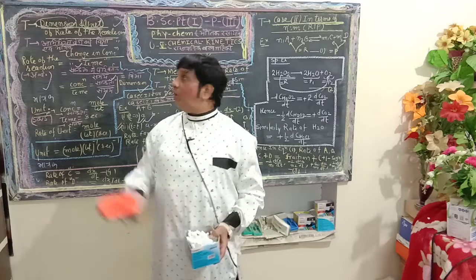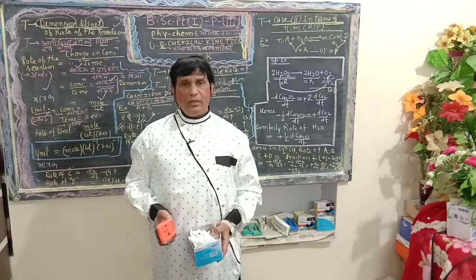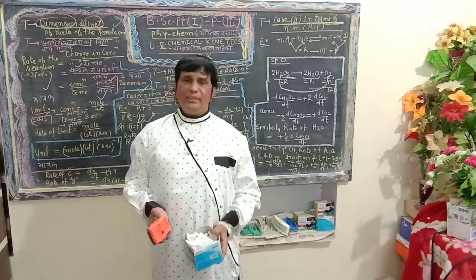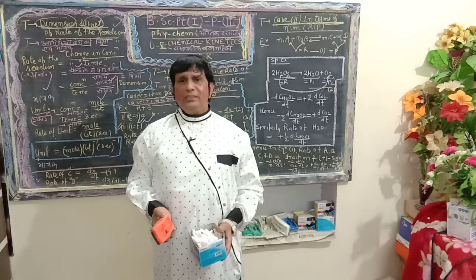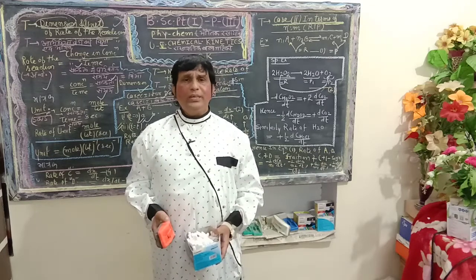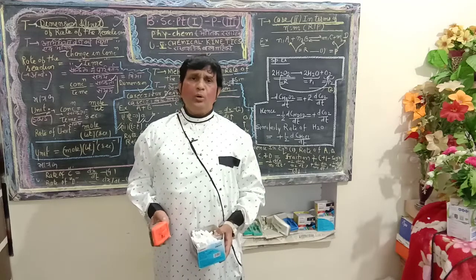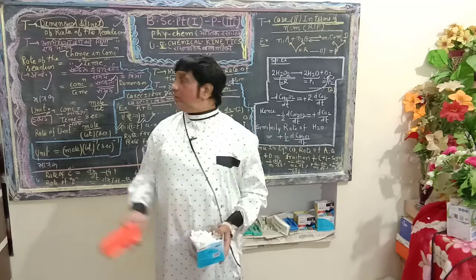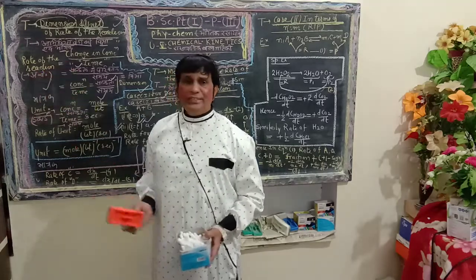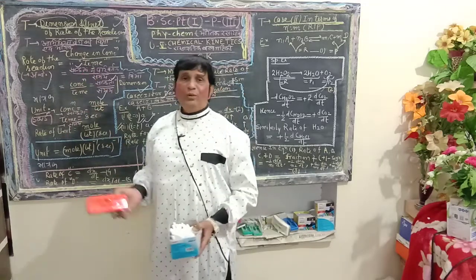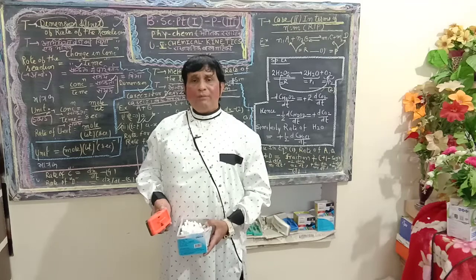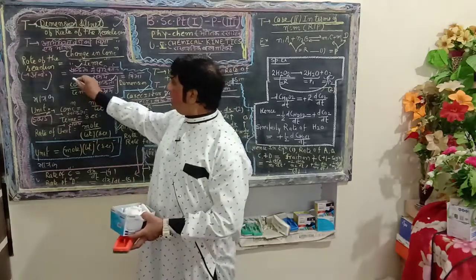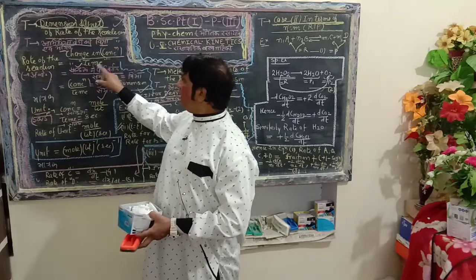Dimension is the fundamental quantity used to define any chemical reaction. Unit is a measure used to define a dimension. On the basis of the definition, rate of reaction is the change in concentration upon time taken for that change — that is, concentration divided by time.